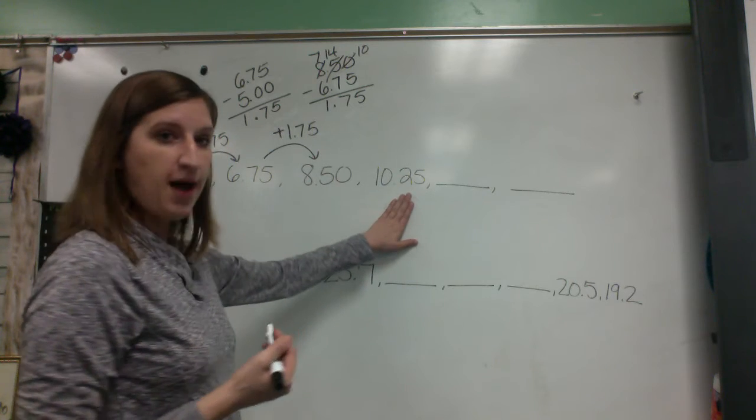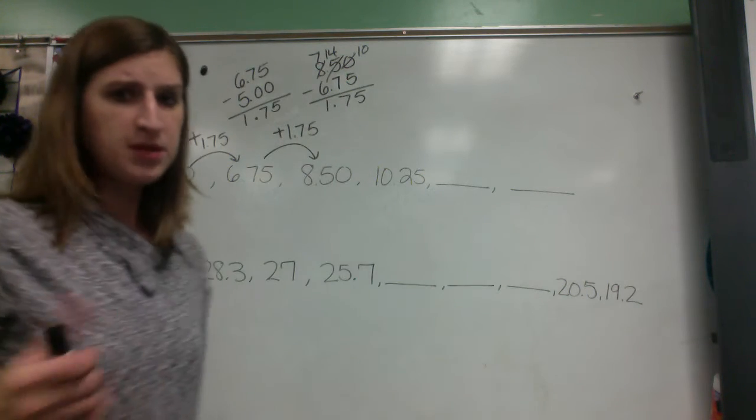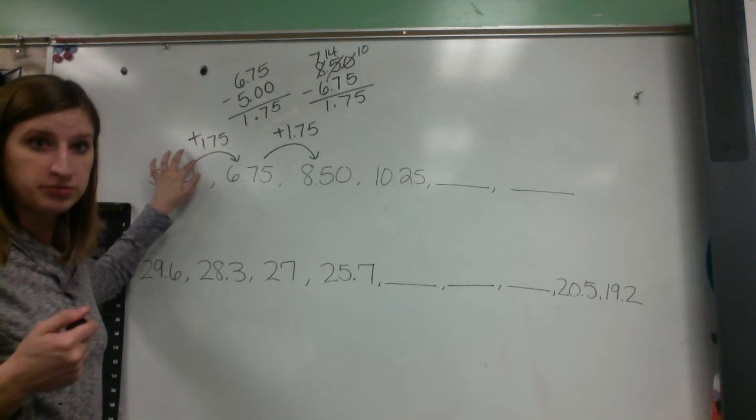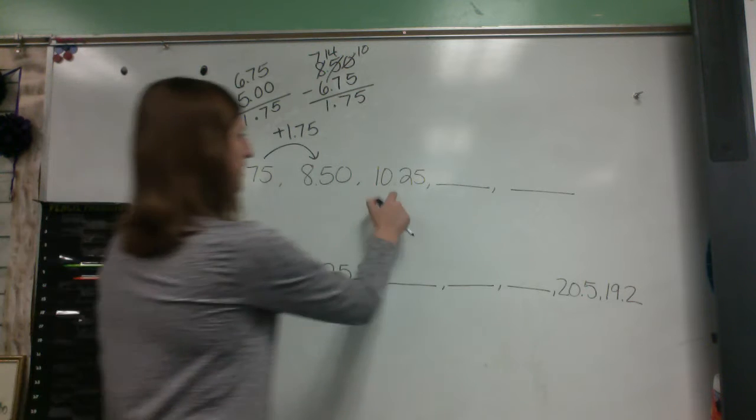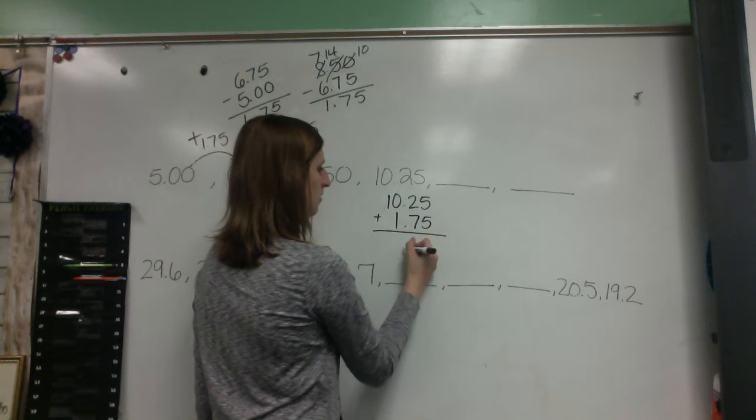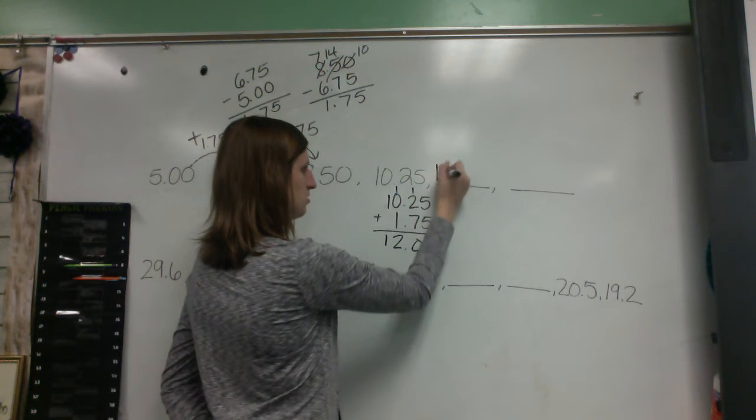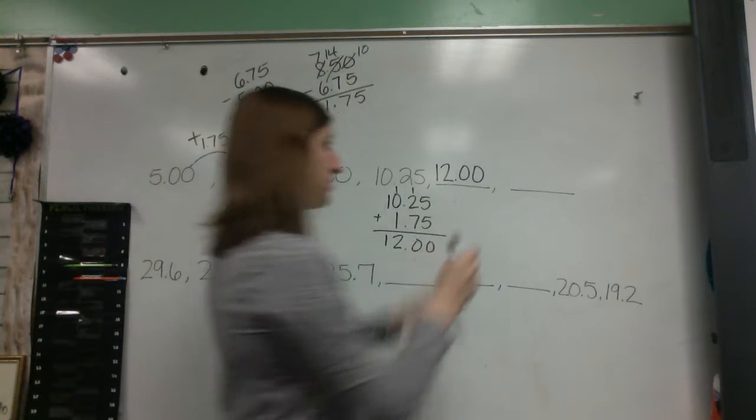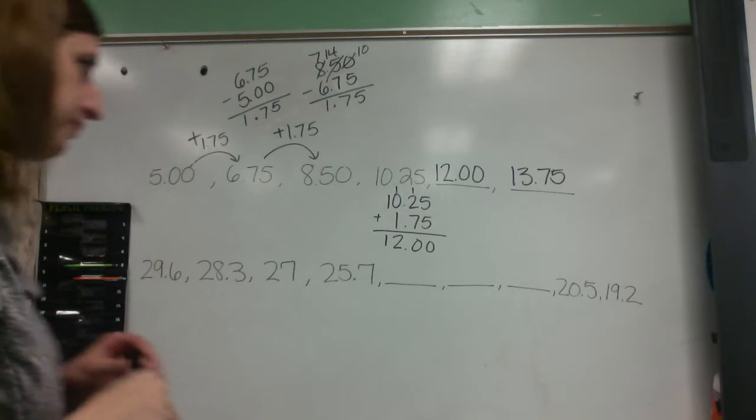So now we're going to pick up at the 10.25 and we're going to add 1.75 to that, find the answer, then add 1.75 to that, find the answer. So when it asks the question of what is the rule, add 1.75 is the rule. Add 1 and 75 hundredths each time is the rule. So let's figure out the answer to these two. So 10.25 plus 1.75. 12 plus 1 is 13 plus .75 is 13.75. Use a little bit of mental math to help you on that.